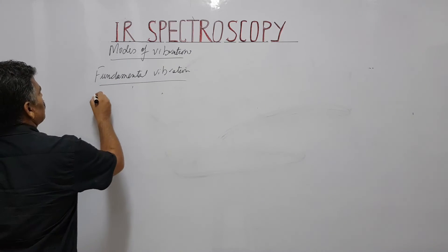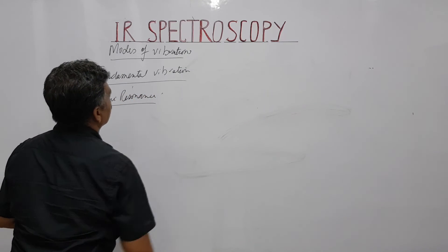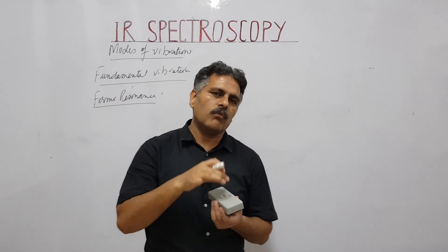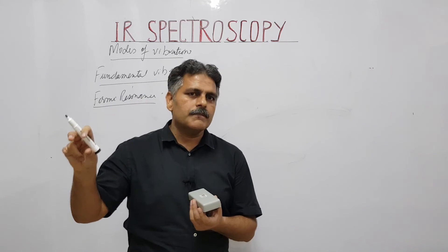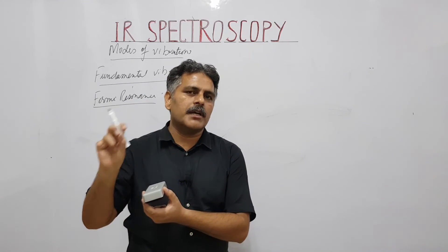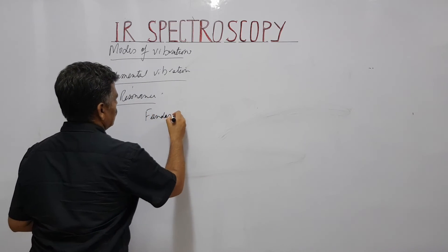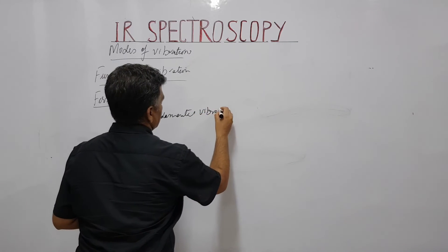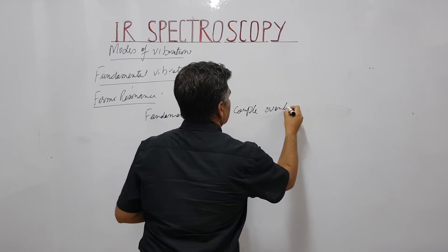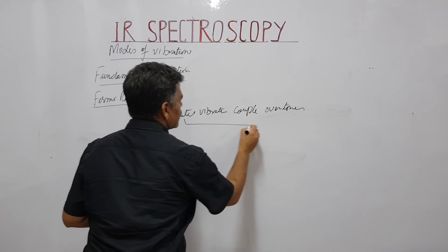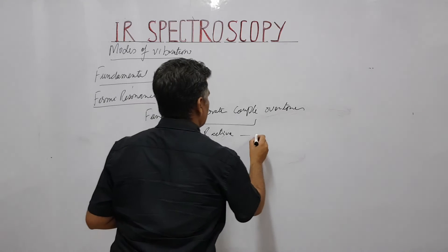Fermi resonance occurs when a fundamental vibration couples with an overtone. Suppose you have a fundamental vibration and it couples with an overtone frequency, the resulting coupled vibration is known as Fermi resonance. If this coupled vibration is IR active, it appears as Fermi resonance in the IR spectrum.